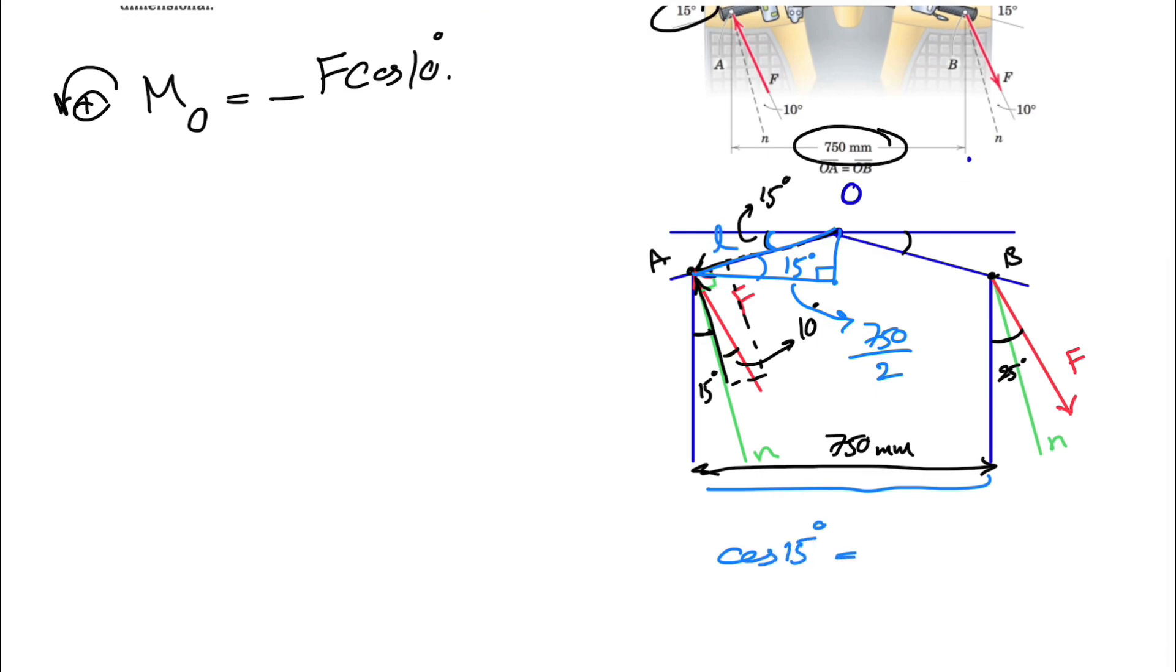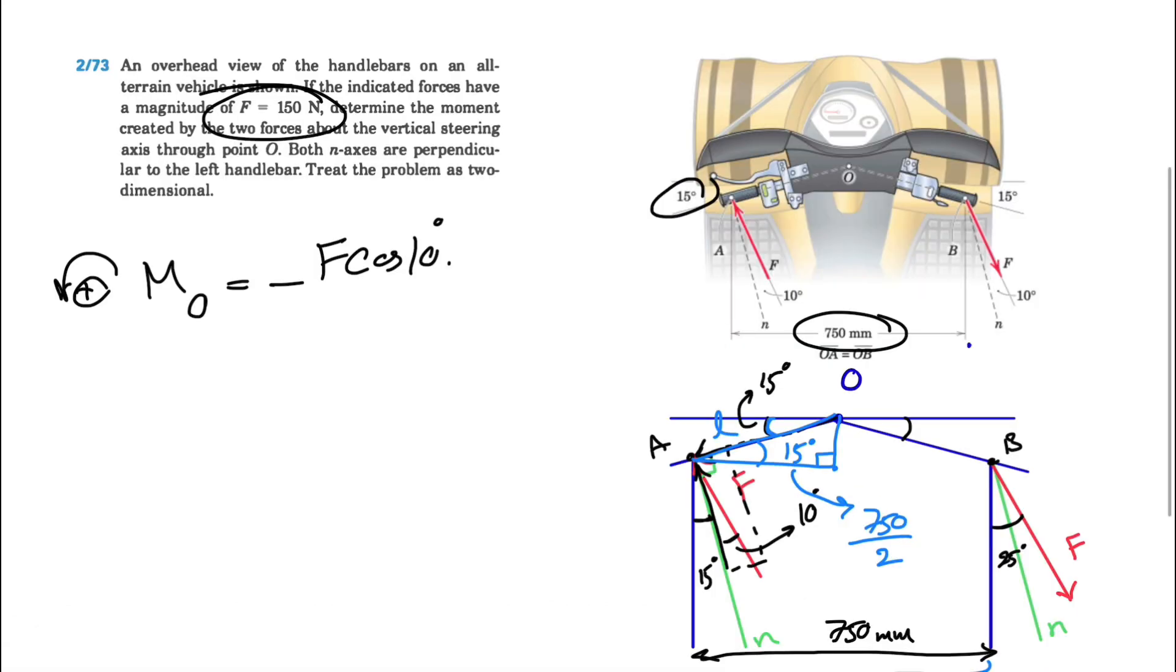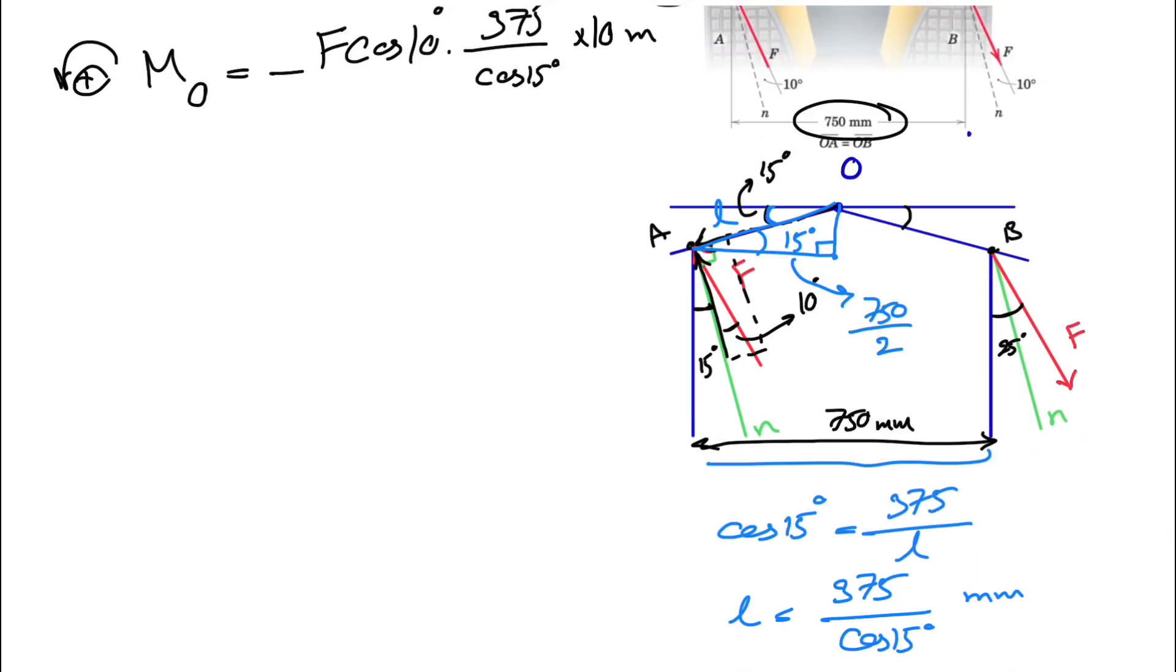We know the whole distance is 750, so 750 divided by two is going to give us the distance we're looking for. If we calculate cosine of 15 degrees, we have the hypotenuse. We can call it L equals 375 over L. So L is basically 375 divided by cosine of 15 degrees, and this is in millimeters, so we divide by 1000 to get it in meters. Let's plug in our L to the moment equation: minus F cosine of 10 times 375 divided by cosine of 15 degrees times 10 to the minus 3 to get it in meters.